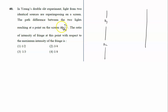The path difference between the two lights reaching at a point, at this point P, the path difference is given to us as 7 lambda by 4. The ratio of the intensity of the fringe at this point with respect to the maximum intensity of the fringe.